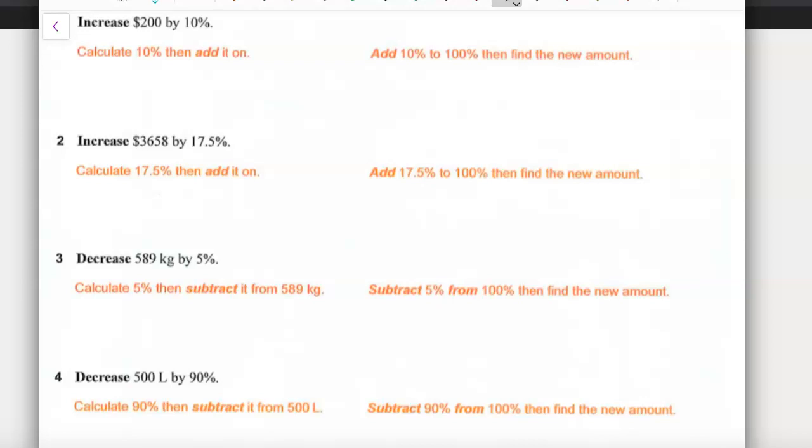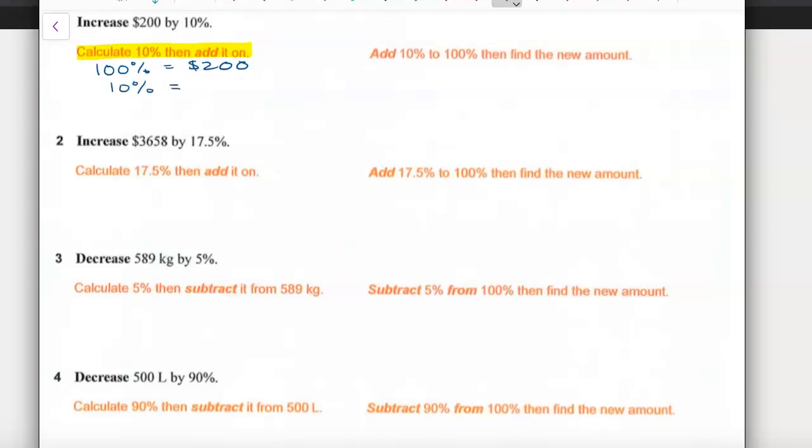Let's start with our first example: increase $200 by 10%. We're going to go with method one - calculate 10% and then add it on. I know that 100%, my total value, is worth $200, so 10% is going to be worth just $20. If I want to increase by 10% I now want 110%. That's simply adding these together and my total value is $220.